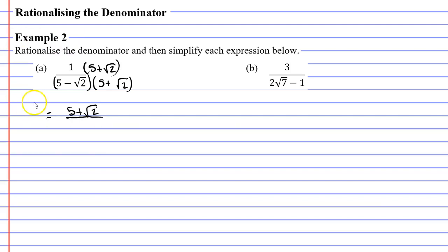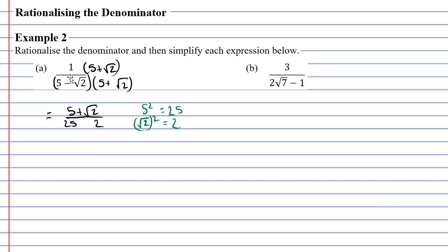What about our denominator? We're going to use the shortcut for the difference of two squares — we simply look at the two terms: 5 and root 2. It's the same two terms for each set of brackets, and we're going to square each term. So we square the 5 and the root 2. 5 squared is 25. And if we take the square root of 2 then square it, we get the whole number 2, because squaring undoes the square root. So we have 25 and 2, and then we put the minus sign between them.